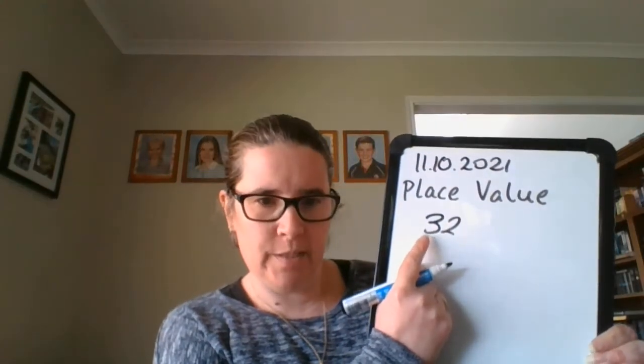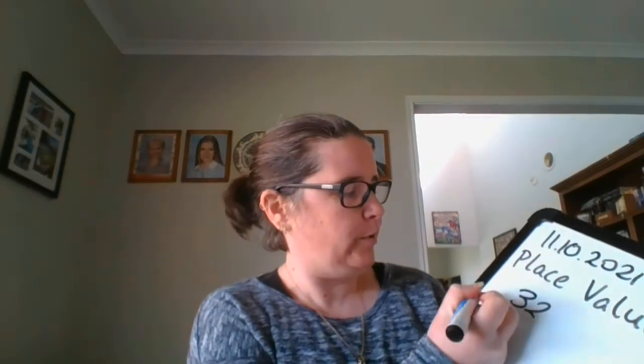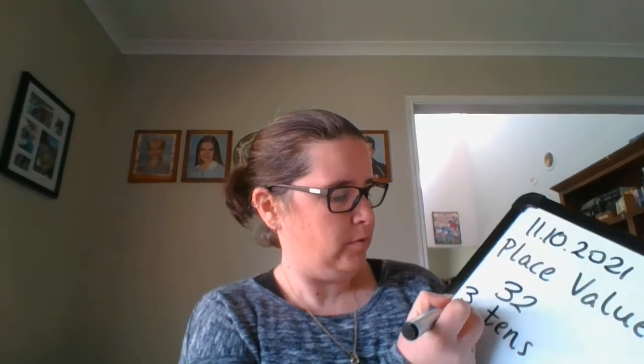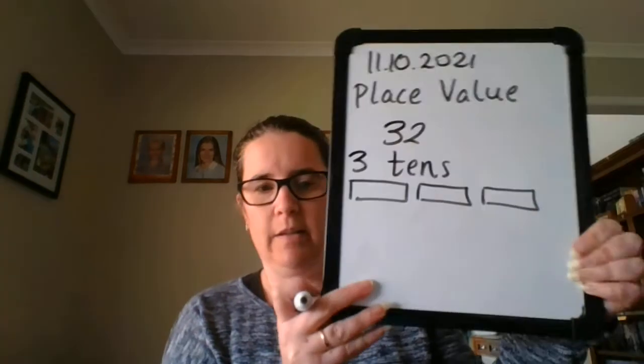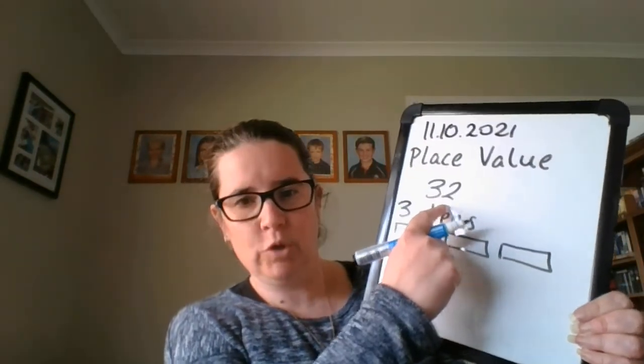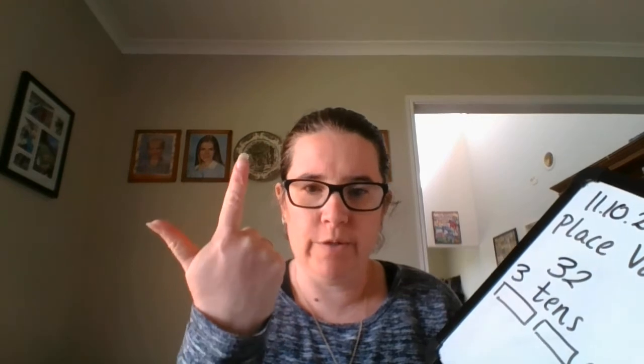Now, how many tens have I got? Three tens: ten, twenty, thirty. Three tens. So I'm going to draw my three tens like that. And then how many ones have I got? Two — one, two. So we know we've gone ten, twenty, thirty, thirty-one, thirty-two. We had three tens and two ones, and I'm going to draw my two ones.